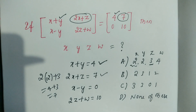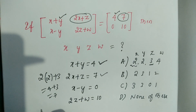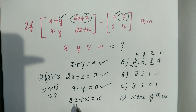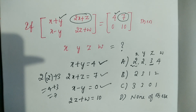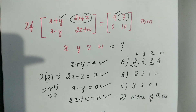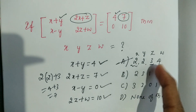Next, check x − y = 2 − 2 = 0 ✓. That is verified. And 2z + w = 2×3 + 4 = 6 + 4 = 10 ✓. So all four equations are satisfied. Therefore, Option A — that is 2, 2, 3, 4 — is correct.